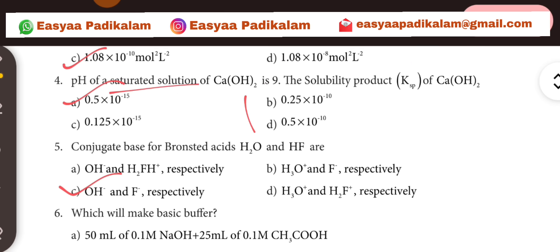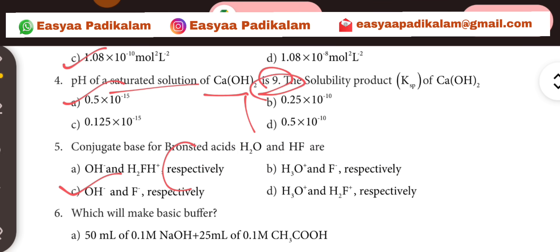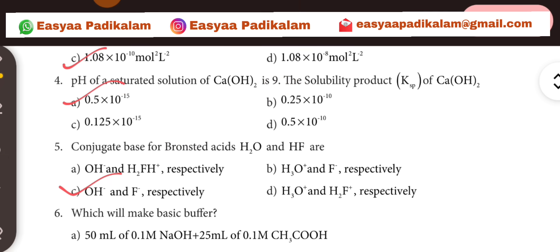pH of a saturated solution. Ca(OH)2 is 9. We have to learn Ca(OH)2. So if you do this, it is 0.5. Our answer is 0.5. 5 are 5, 5 are 10, 5 are 13. The answer is 9 o'clock.